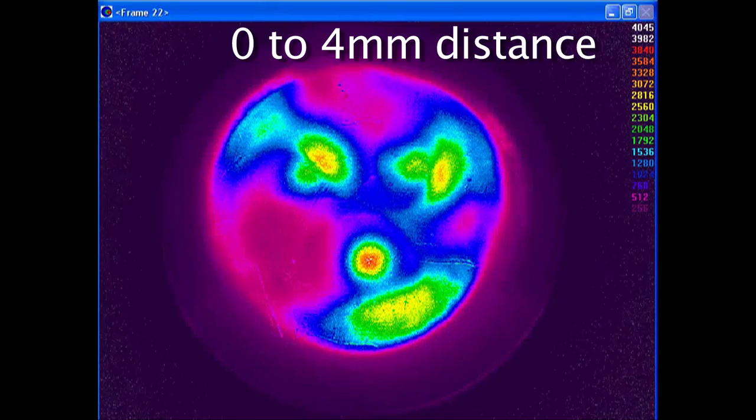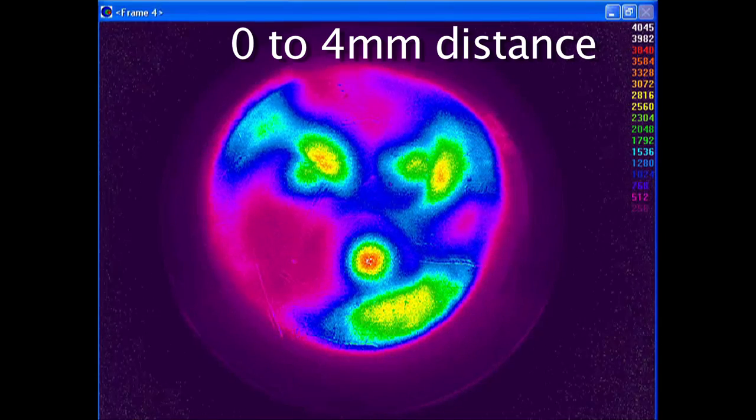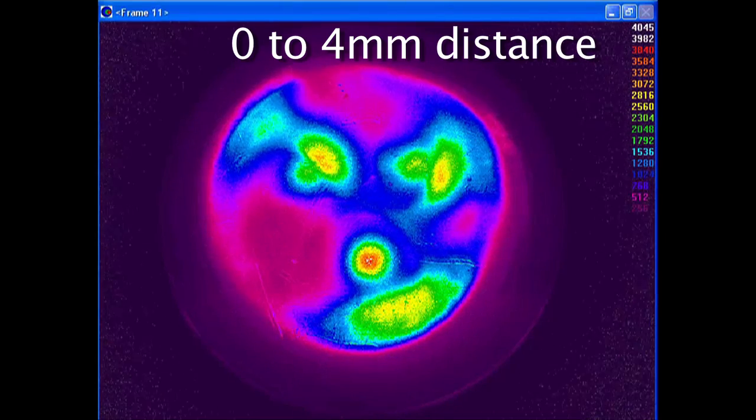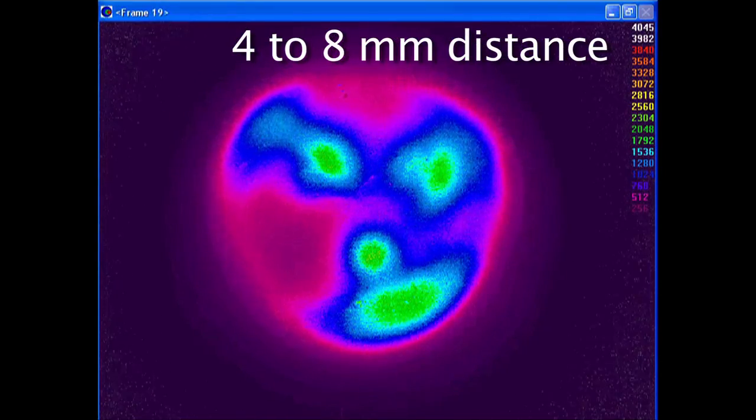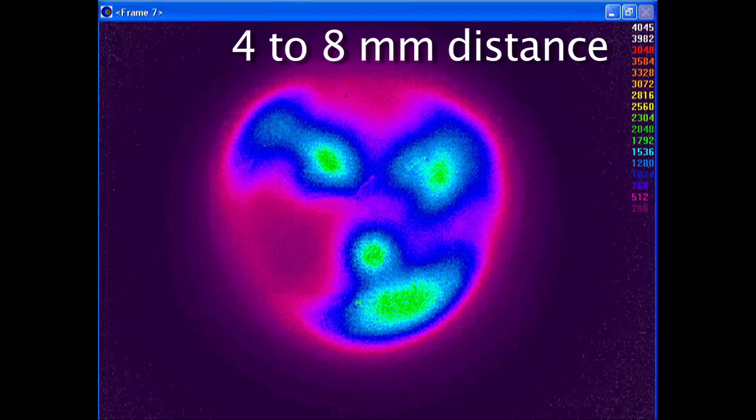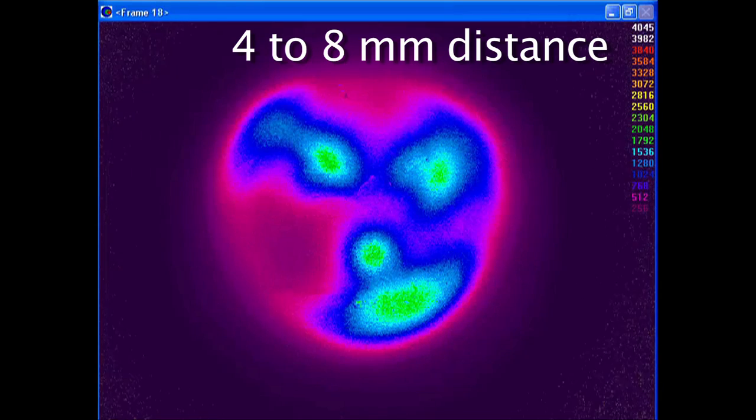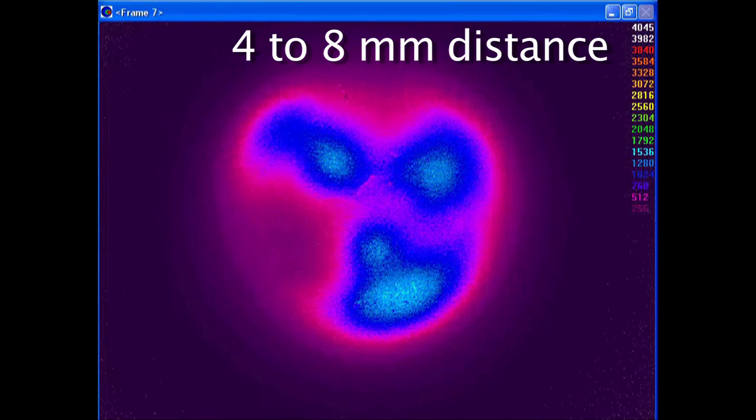When the beam profiler software processes this information, it produces a calibrated map of the irradiance distribution across the light beam from the curing light. The effect of increasing the distance from 0 to 4, and then out to 8 mm, can now be clearly observed.